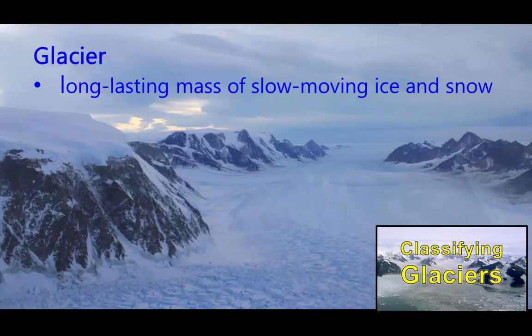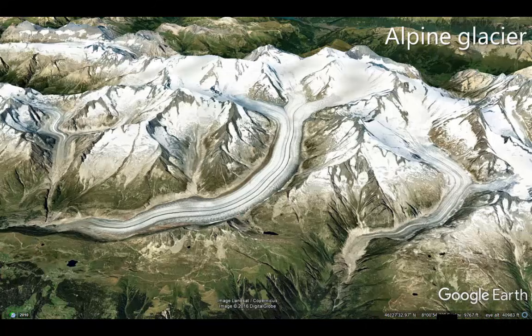A glacier is a long-lasting mass of slow-moving ice and snow. Just like streams, moving ice can be an agent for erosion and deposition.